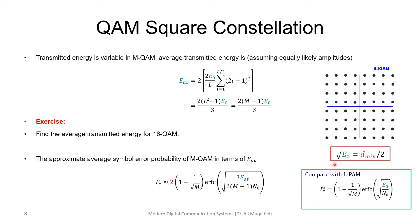We can use this fact to approximate the average symbol error probability. We can relate to that as an extension of L-PAM. For the single dimension pulse amplitude modulation, we can derive this expression. From there, we can compare with M-QAM.